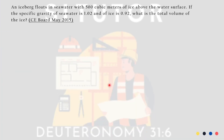Question 1. This is from Seaboard May 2015. An iceberg floats in seawater with 500 cubic meters of ice above the water surface. If the specific gravity of seawater is 1.02 and of ice is 0.92, what is the total volume of the ice? Letter A: 51, B: 5150, C: 52, D: 5250.